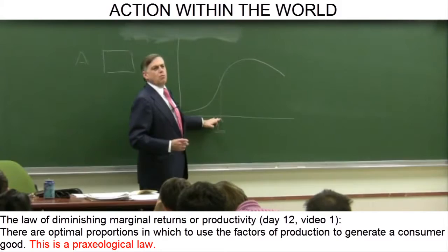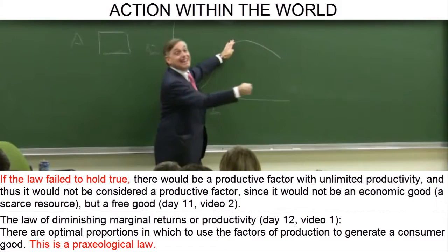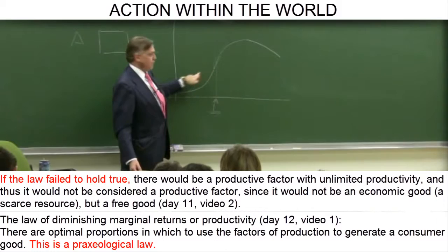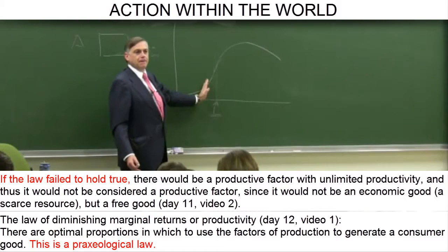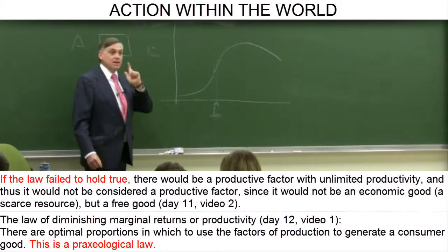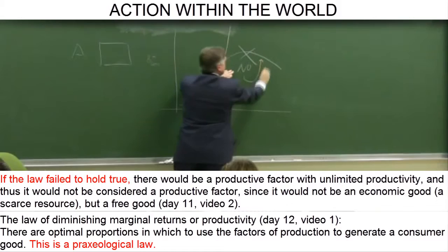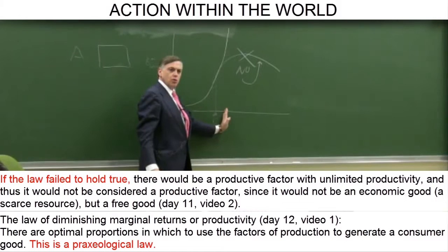I am going to demonstrate this a contrario sensu. What would happen if the law of diminishing marginal productivity or returns did not hold true? That is, the law that tells us that there are optimal combinations — a level, a number, a volume of the variable factor — beyond which additional units result in ever smaller increases in consumer goods: diminishing marginal productivity. That is what the law says, nothing more. That beyond a certain volume, the curve must change from concave to convex. What would happen if the law did not hold true? What would happen if there were no optimal combinations of productive factors for generating a consumer good?